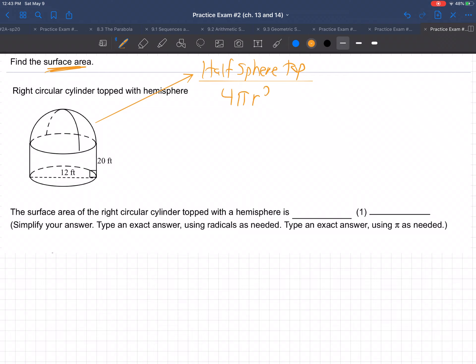So the sphere formula for the surface area is 4πr², but we only have a half a sphere, so it's half times 4πr², because we have half a sphere. So that'll handle the top.